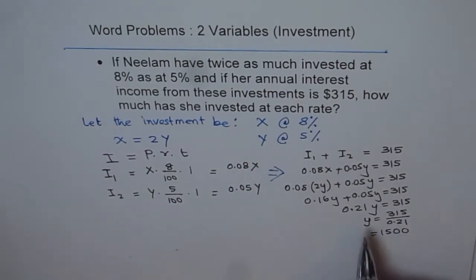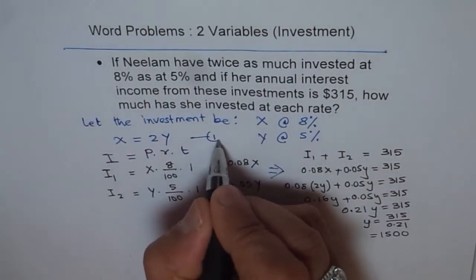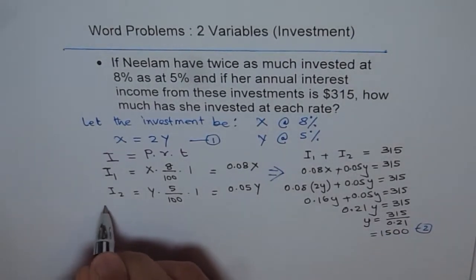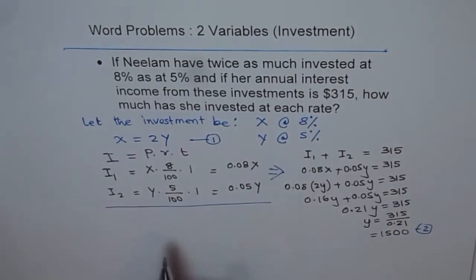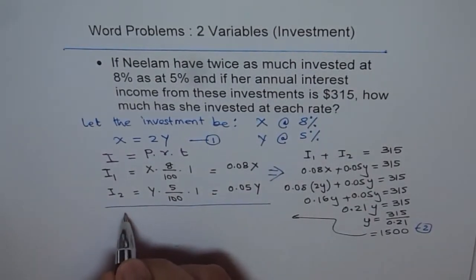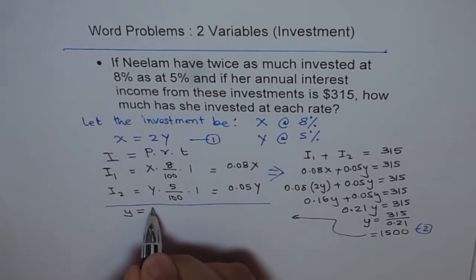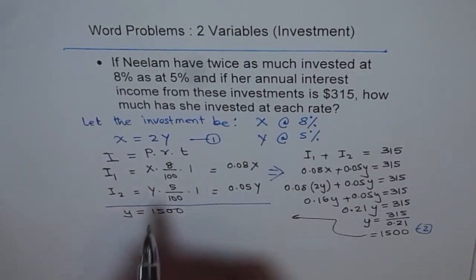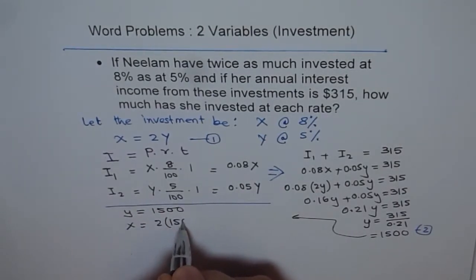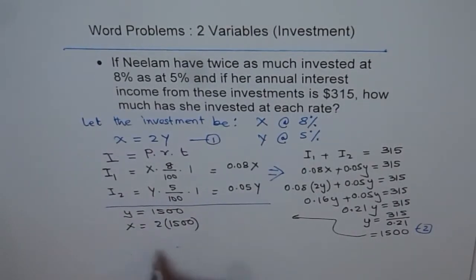We get a value of Y as 1500. Once you get Y as 1500, we know what X is. We will just go back to our first equation which is this one. That is our second equation where we get what Y is. Let me now write down the answer here. We will bring it down from there. We say Y is equals to 1500 and X is equals to 2 times Y, 2 times 1500 which is 3000.